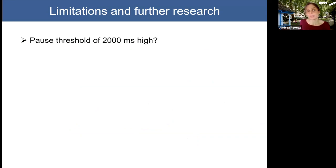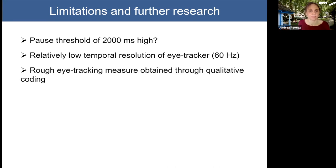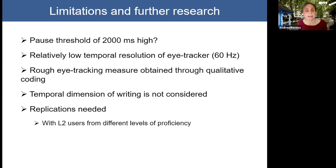This study had a number of limitations that led to further research directions. Our pause threshold was 2,000 milliseconds, which is relatively long, so we wanted to look at shorter pauses too. There was a relatively low temporal resolution of the eye tracker we used — 60 Hz — which does not count as a very good eye tracker anymore. We also obtained relatively rough eye tracking measures through qualitative coding, and we didn't consider the temporal dimension of writing. It would also be interesting to consider how L2 writers might differ across different proficiency levels and task types.